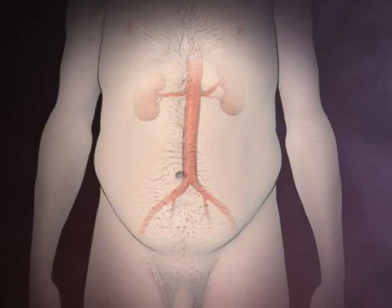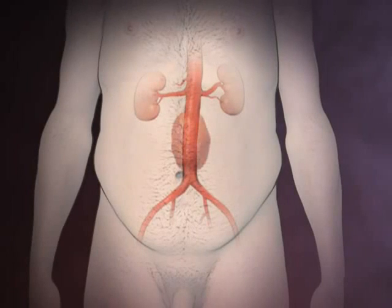Abdominal aortic aneurysm is a potentially life-threatening condition characterized by degenerative changes in the wall of the abdominal aorta that lead to progressive dilatation and possible rupture if the condition is untreated.